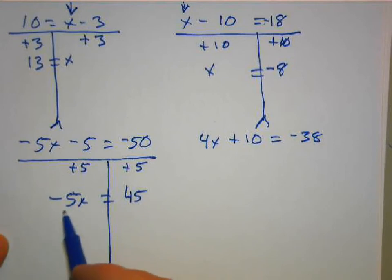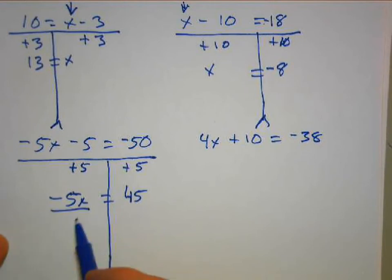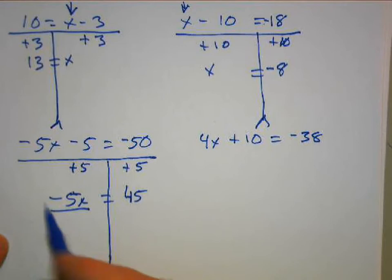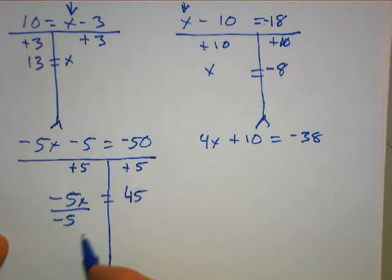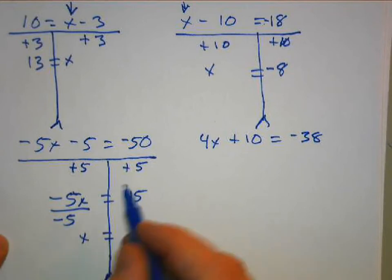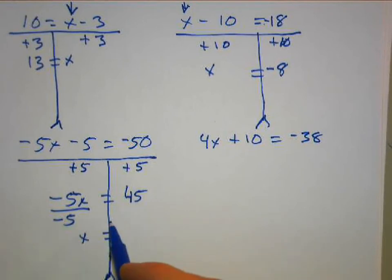And we undo it by dividing by the coefficient here, whatever that first number is. This is negative 5. Negative 5 over 5 is 1X, so this becomes X equals. And we did divide by negative 5 there, so we're going to divide by negative 5 here.